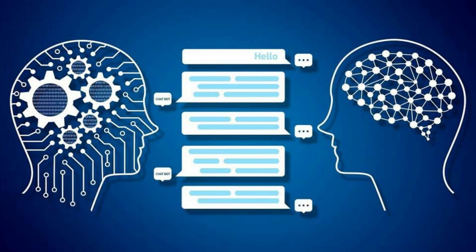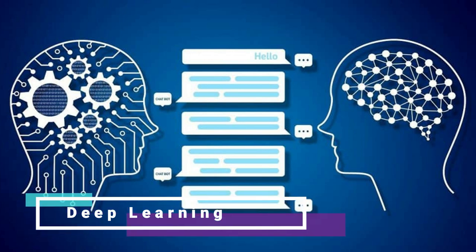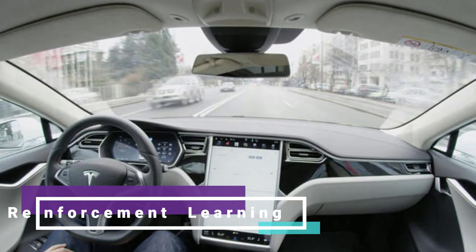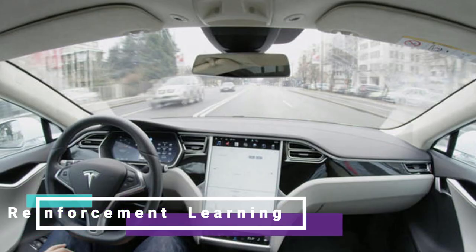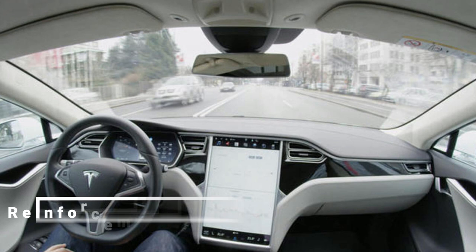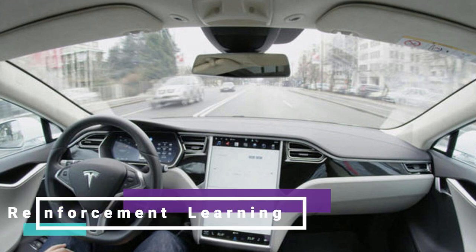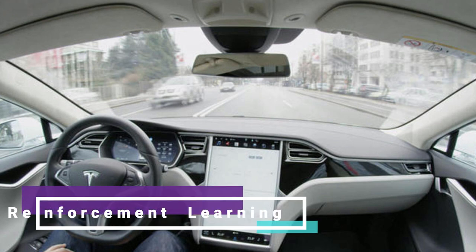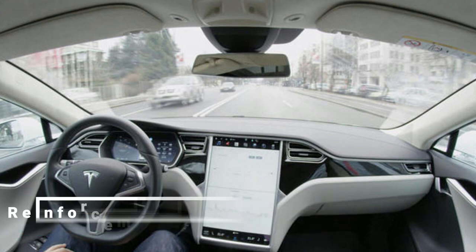Next is Reinforcement Learning. This is a type of machine learning where agents learn to make decisions by interacting with their environment. Think of it as trial and error. It's what enables self-driving cars to navigate complex road situations or video game characters to learn and adapt to new challenges.